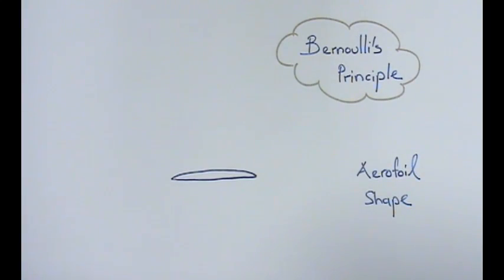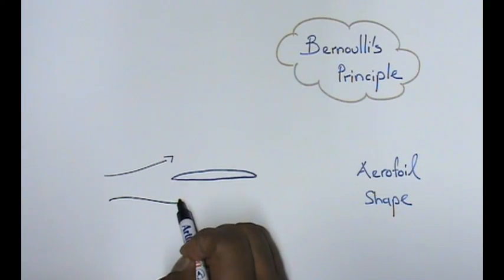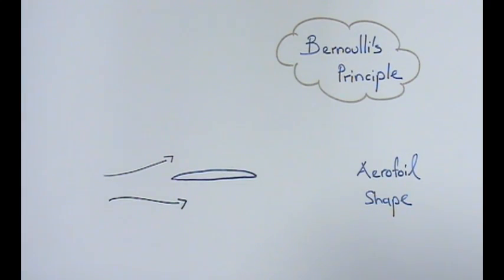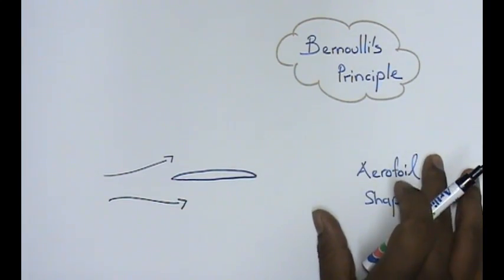What Bernoulli explained to us is that if air moves up and moves down, it generates a region of different pressure and velocity.